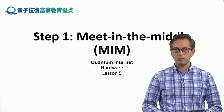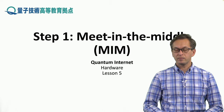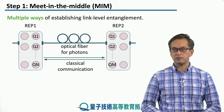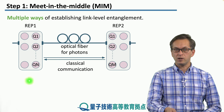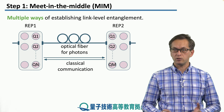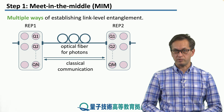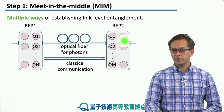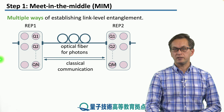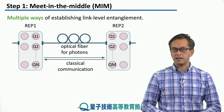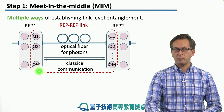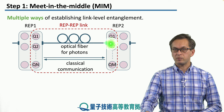Let's start with the first architecture called Meet in the Middle, or MIM. Our goal is to establish entanglement between neighbouring repeaters in a network. Here we have repeater 1 equipped with N quantum memories and repeater 2 equipped with M quantum memories — we're not assuming they both have the same number. They are connected by an optical fibre serving as our quantum communication channel, as well as classical communication channels, so they're free to exchange classical messages. We want to create entanglement between memories in repeater 1 and memories in repeater 2.